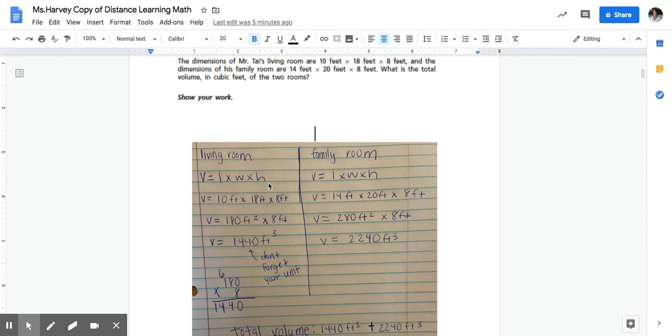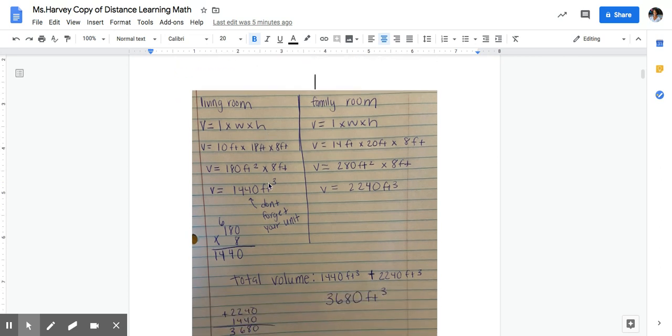Then I solved, and as I'm solving I'm making sure to do the work on the paper and I'm making sure to include my units. So for the living room, if my dimensions were 10 feet by 18 feet by 8 feet, I plug those numbers in for the length, the width, and the height.